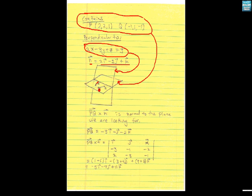So that means I actually have two vectors that are contained in this plane, PQ right here, and n. So if I take PQ cross n, that will be a vector that's normal to the plane whose equation I'm looking for.